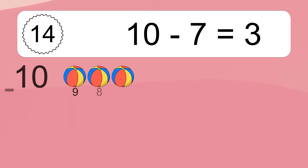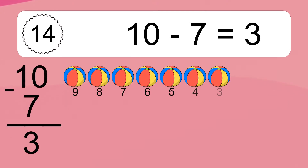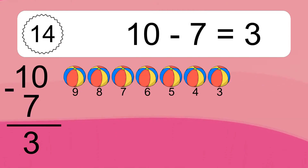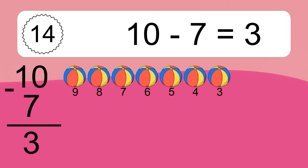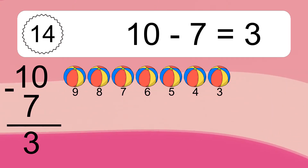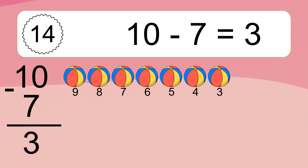10 minus 7 equals 3. Let's count it: 9, 8, 7, 6, 5, 4, 3.